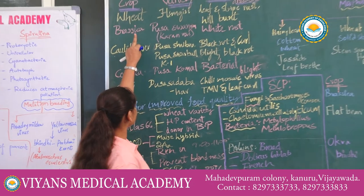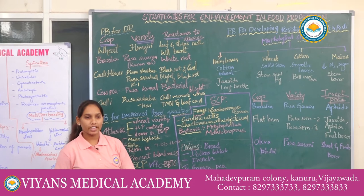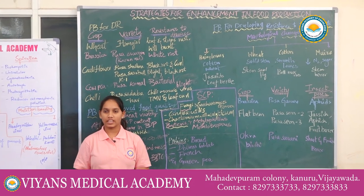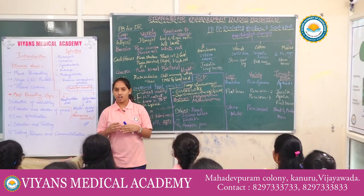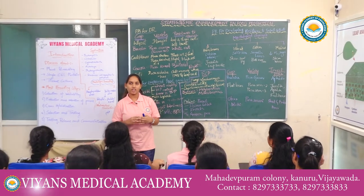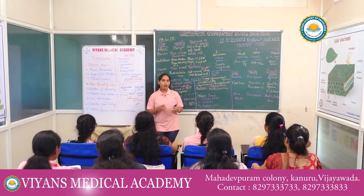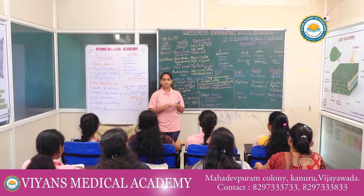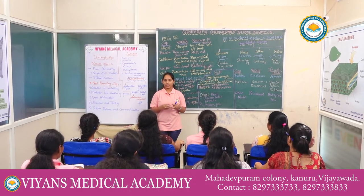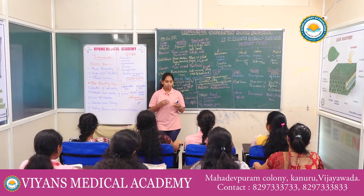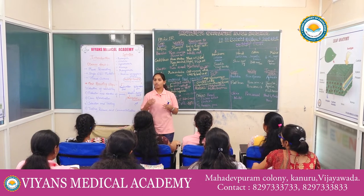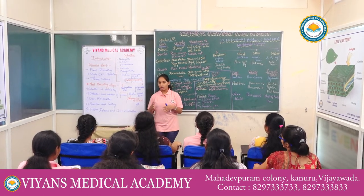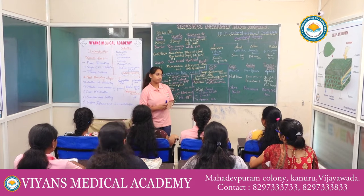Plant breeding for disease resistance. There are many diseases and pathogens that affect plants. The pathogens are fungi, bacteria, and viruses. For example: fungi cause red rot of sugarcane; bacteria cause black rot of crucifers; and viruses include tobacco mosaic virus in tobacco and turnip mosaic virus in turnip.